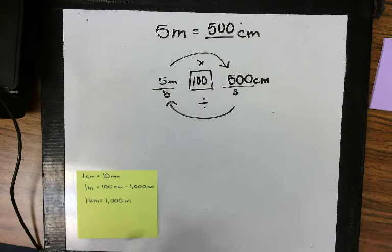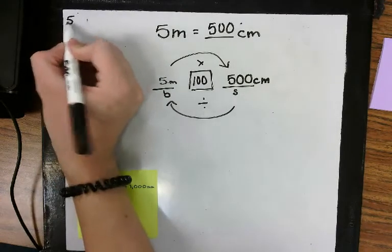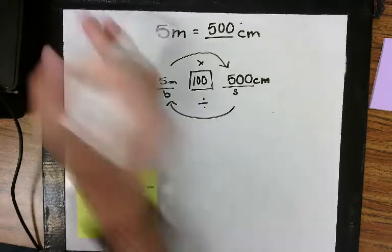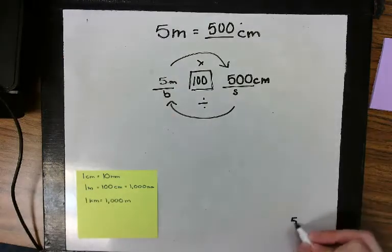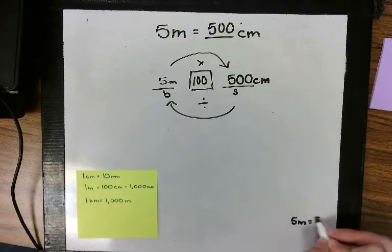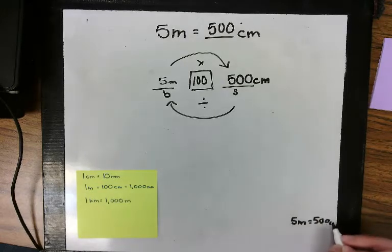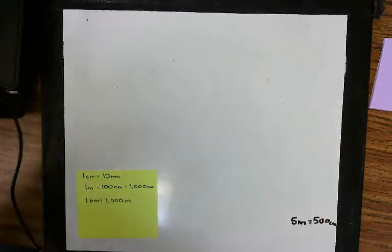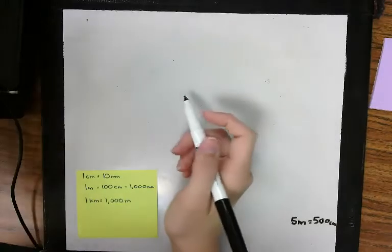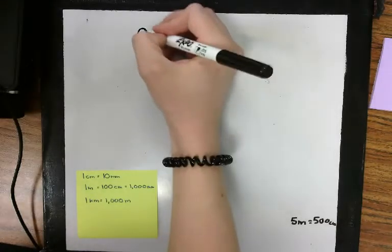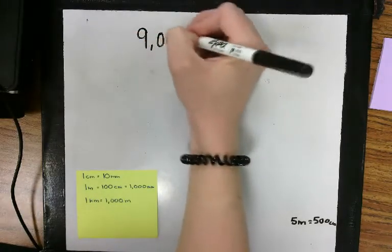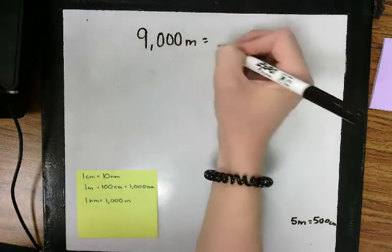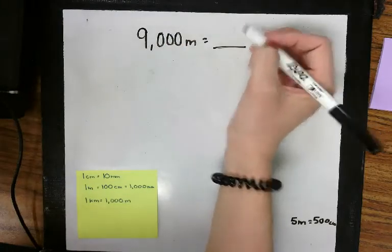I'm going to keep track down here of what we've been doing. Moving on. Right now, I'm looking on page 858 at those guided practice questions. We're going to look at 9,000 meters equals how many kilometers?